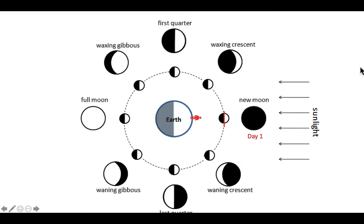Hello earth science students, this is your lesson on understanding the phases of the moon diagram. This diagram is commonly used to help people understand how the phases of the moon work and why you see what you see at different times during the lunar month. But the diagram is a little tricky, so I'm going to walk you through the different parts of it to help you understand it better.